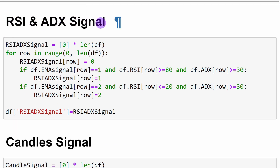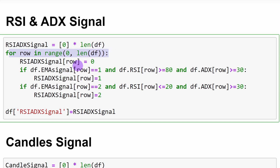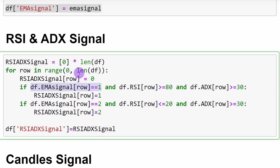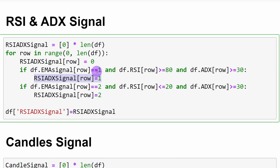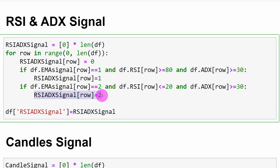For the RSI and ADX signal, for each candlestick row we look at the previously computed EMA signal. If the EMA signal is 1 (downtrend), and the RSI of that candlestick is above 80, and the ADX is above 30, we return a signal equal to 1 — our selling signal. Conversely, if we are in an uptrend (EMA signal = 2) and RSI is below 20 and ADX is above 30, we return signal 2 — our buying entry point. This is stored as a new column called 'rsi_adx_signal'.